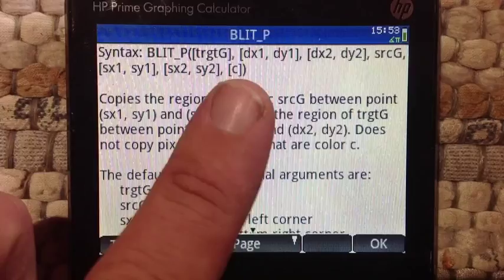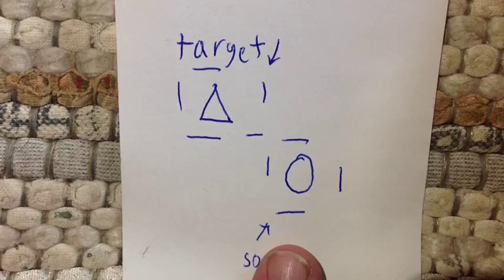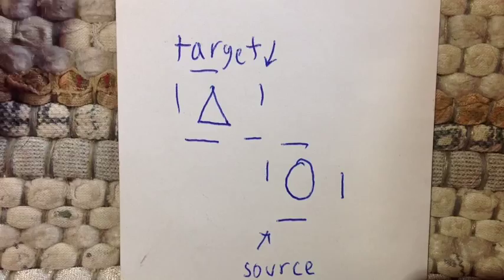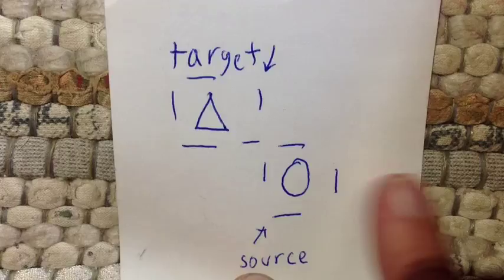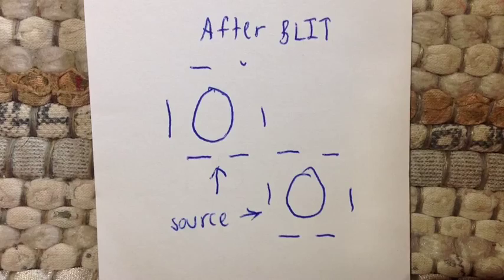What do we mean by target and source? Let's take an example. Say I want to make a copy of this circle and replace this triangle with that circle. The circle is going to be the source and the triangle is going to be the target. What the blit command does is copy this circle and replace the triangle with it, so at the end we have two circles — two areas that look exactly like the source.